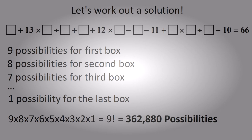In total, there are 9 factorial, or 362,880 possibilities. That's a lot of possibilities to try and work through just by brute force, and therefore we're not going to figure out a solution just by simply guessing and checking every single possibility.